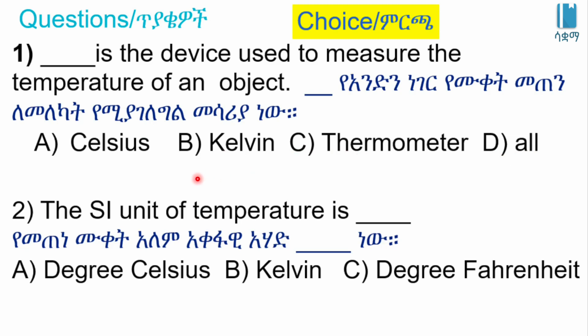The temperature of an object can be expressed in A) Celsius, B) Kelvin, or C) Fahrenheit. You can see the temperature of an object using these units. Thank you for your attention.